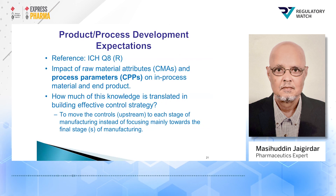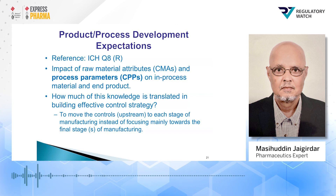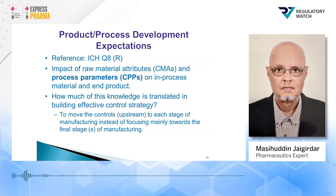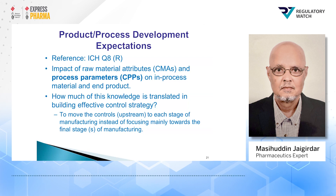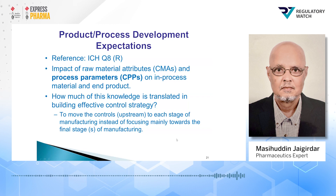The references to ICH Q8 address the impact of raw material attributes, CMAs, and process parameters (CPPs) on in-process materials and end products. The question is how much of this knowledge is translated into building an effective control strategy to move the controls upstream to each stage of manufacturing, instead of focusing mainly on the final stage of manufacturing.